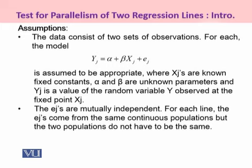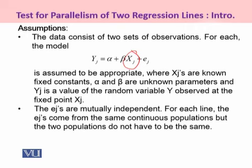To apply the Hollander method for testing parallelism of two regression lines, certain assumptions must be met. First, the data consists of two sets of observations for each of which the model yj = alpha + beta * xj + epsilon_j is assumed appropriate, where xj are fixed known constants, alpha and beta are unknown parameters, and yj is the value of random variable y observed at fixed point xj. Second, the errors are mutually independent of each other. Third, for each line the errors are drawn from the same continuous population, but the two populations do not have to be the same.